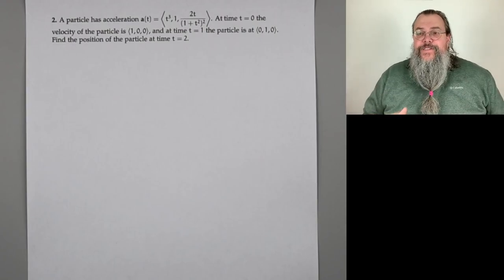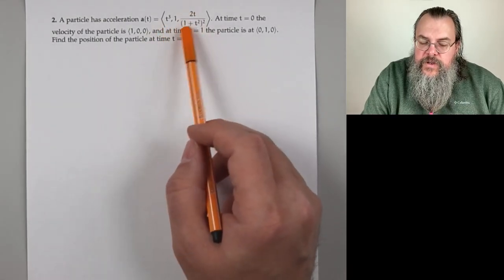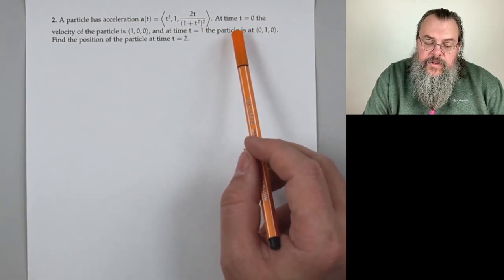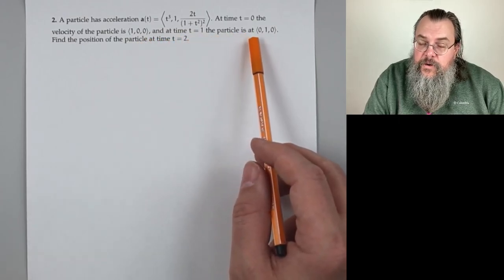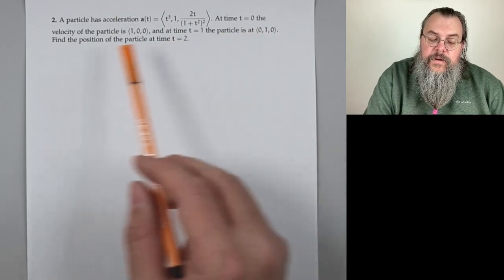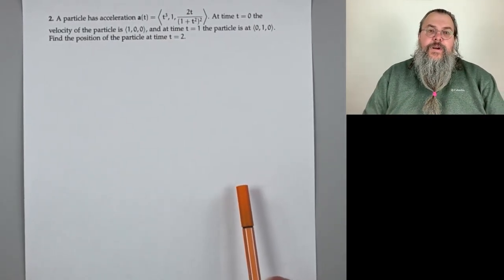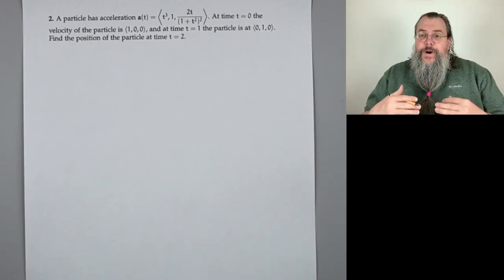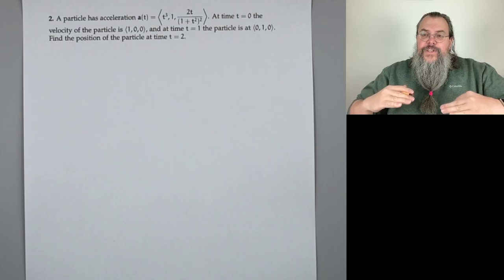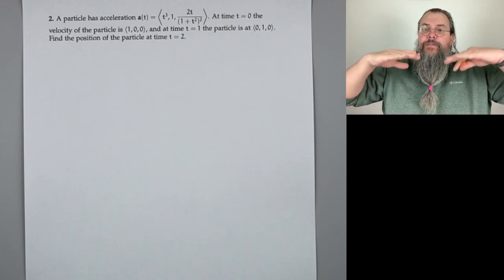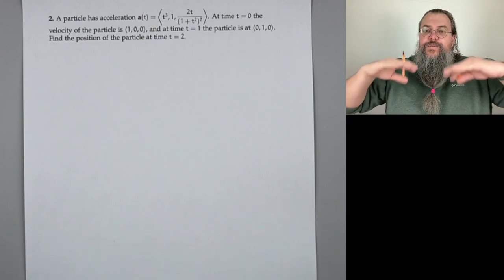Number two. A particle has acceleration a(t) = ⟨t³, 1, 2t/(1+t²)²⟩. At time t = 0, the velocity is (1, 0, 0). At time t = 1, the particle is at position (0, 1, 0). Find the position at t = 2. We have acceleration and want position, so we climb the ladder: integrate acceleration to get velocity, integrate velocity to get position — two antiderivatives with constants to determine.